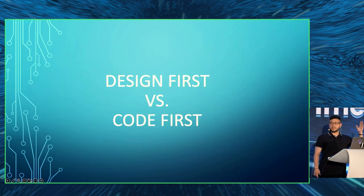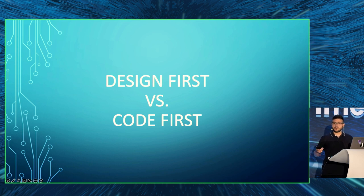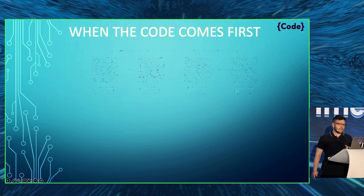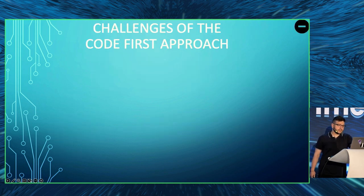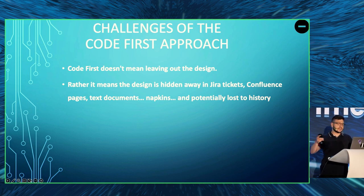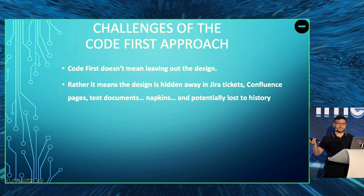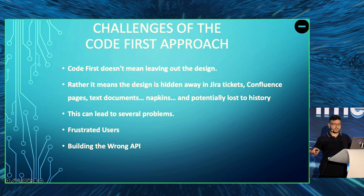Design first versus code first — when building software, there are several approaches. With the code first approach, you start programming the implementation directly. It's a synchronous flow usually encountered in traditional waterfall development. Delays at any point push back overall delivery, and changes are costly since time and resources have already been sunk. The design is hidden away in Jira tickets, Confluence pages, text documents, or napkins — potentially lost to history. This can lead to frustrated users, building the wrong API, missed opportunities, and duplicated work.